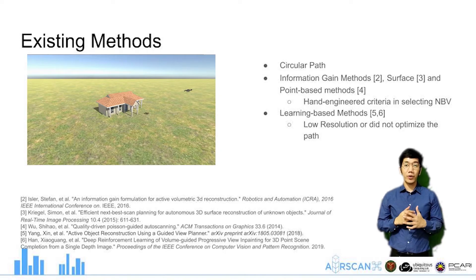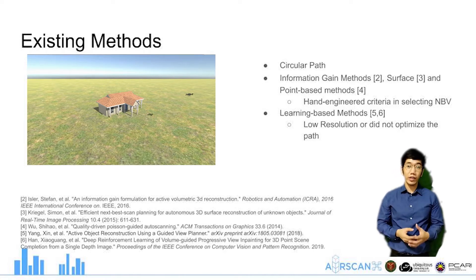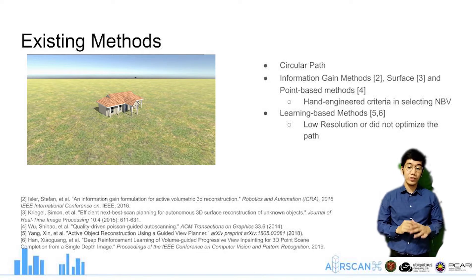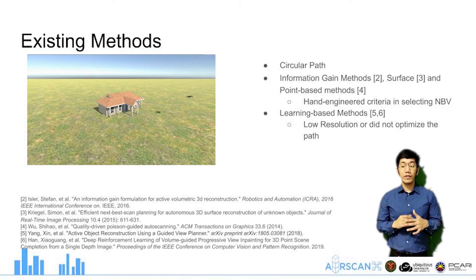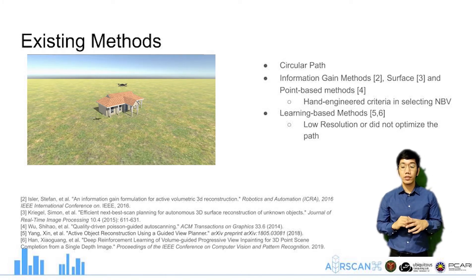Existing methods to select viewpoints include the off-the-shelf circular path, commonly available in commercial drones, where the drone circulates around a target point. Existing works have explored information gain methods, surface-based methods, and point-based methods. However, all of these used hand-engineered criteria for selecting viewpoints. Some learning-based methods were also proposed but with low resolution or did not optimize the path.